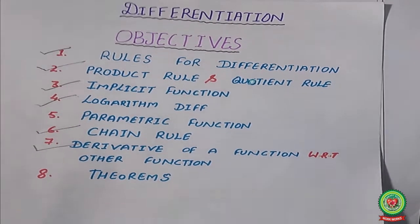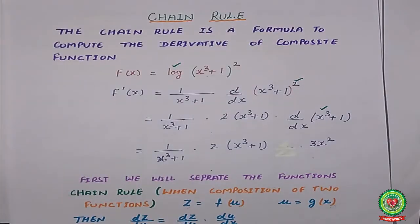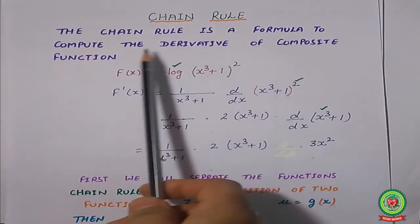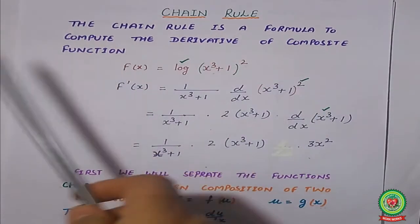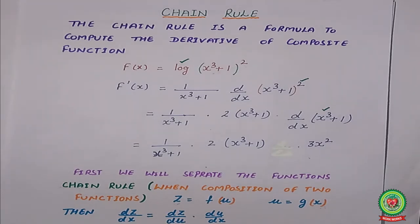Before starting today's topic, let's first discuss what the chain rule is. A chain rule is a formula to compute the derivative of a composite function. Composite function means a combination of two or more than two functions. Whenever we differentiate a function, it is already a combination of two or three functions. But if a particular problem says to solve by chain rule, then we have to apply the chain rule.